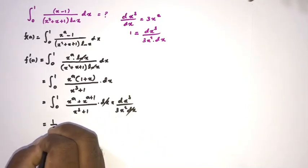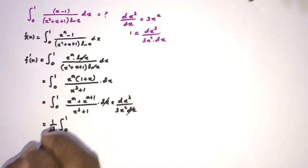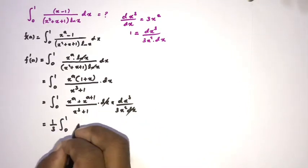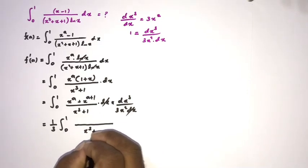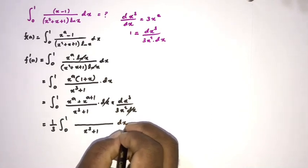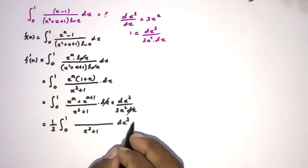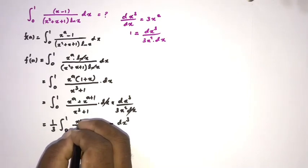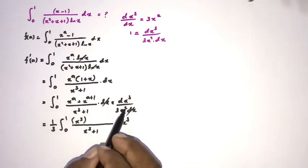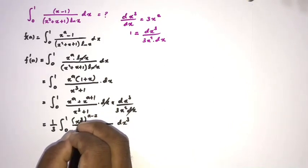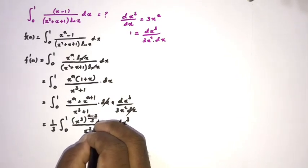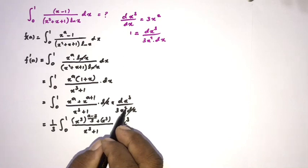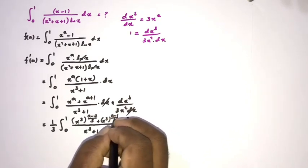We can write (1/3) times the integral from zero to one. Moving x squared to the numerator, integrating with respect to x cubed, we rewrite the exponents: x cubed raised to (a minus 2)/3 over (x cubed plus one), plus x cubed raised to (a minus 1)/3 over (x cubed plus one).